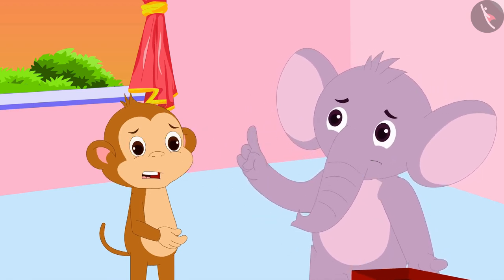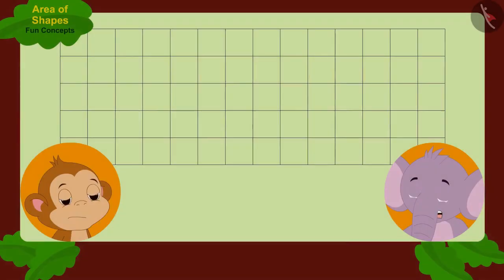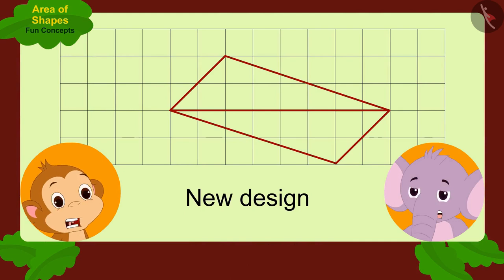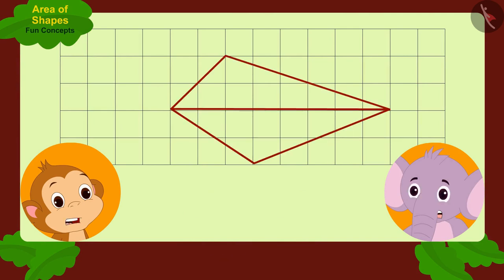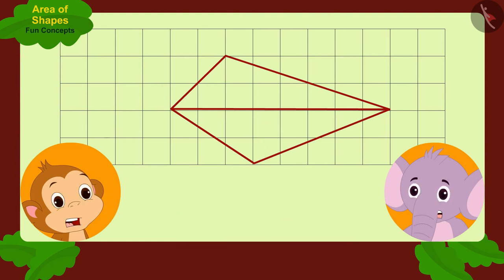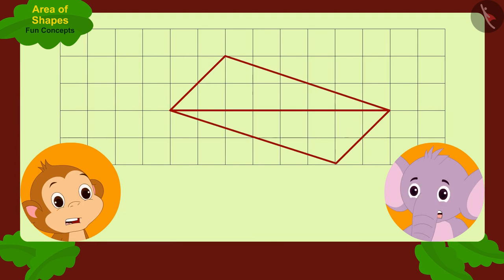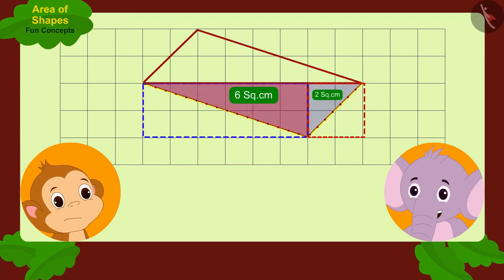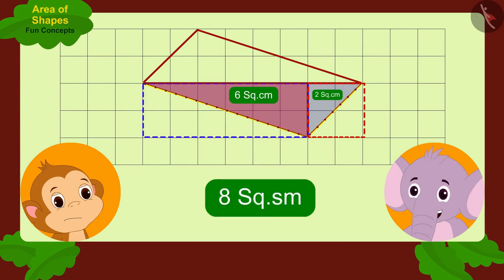Appu showed Babban his new design and Babban was shocked. How can this happen? I found the area of the erased part of this design and it was eight square centimeters — then how can your design be different? Appu then found the area of this part of his design and showed it to Babban, and that too was eight square centimeters.